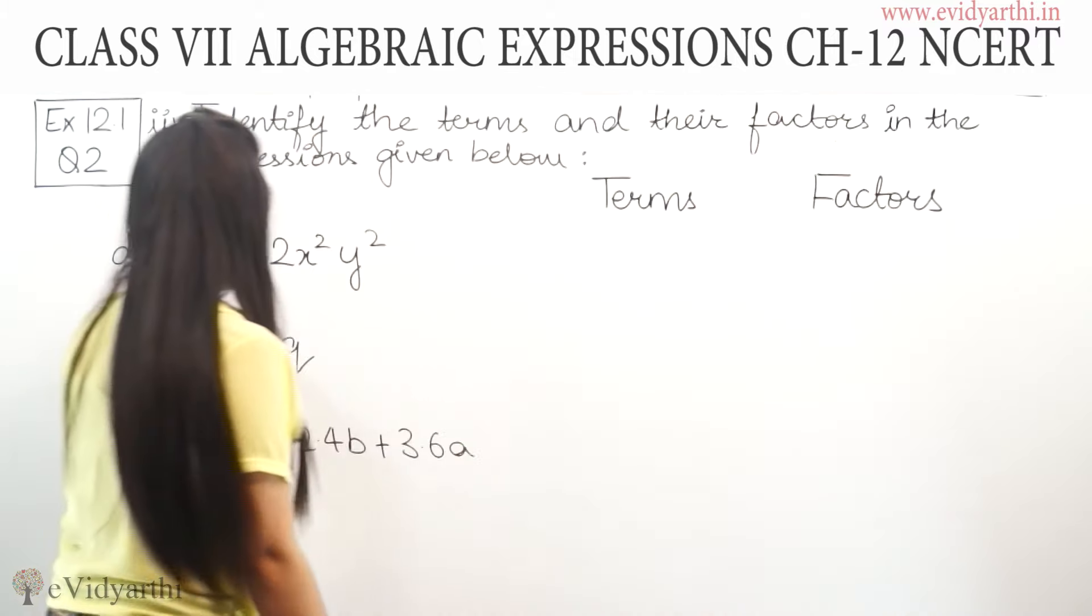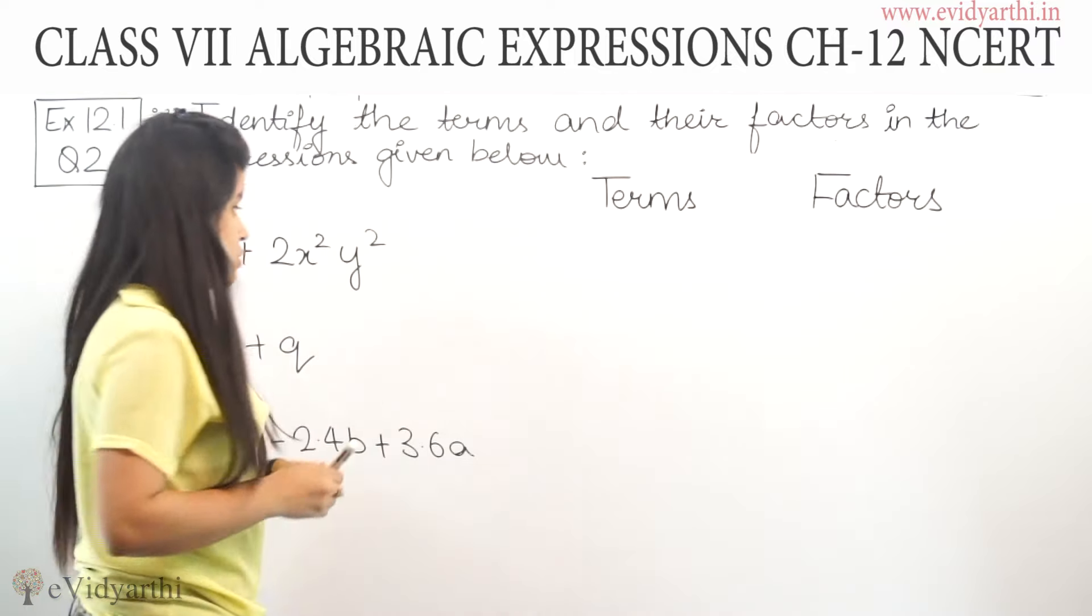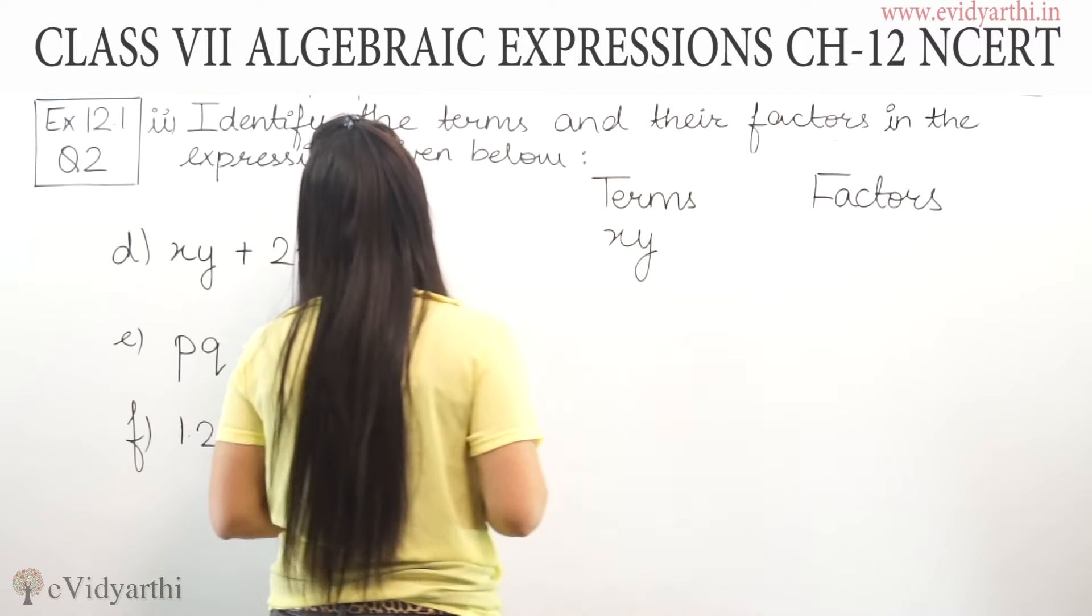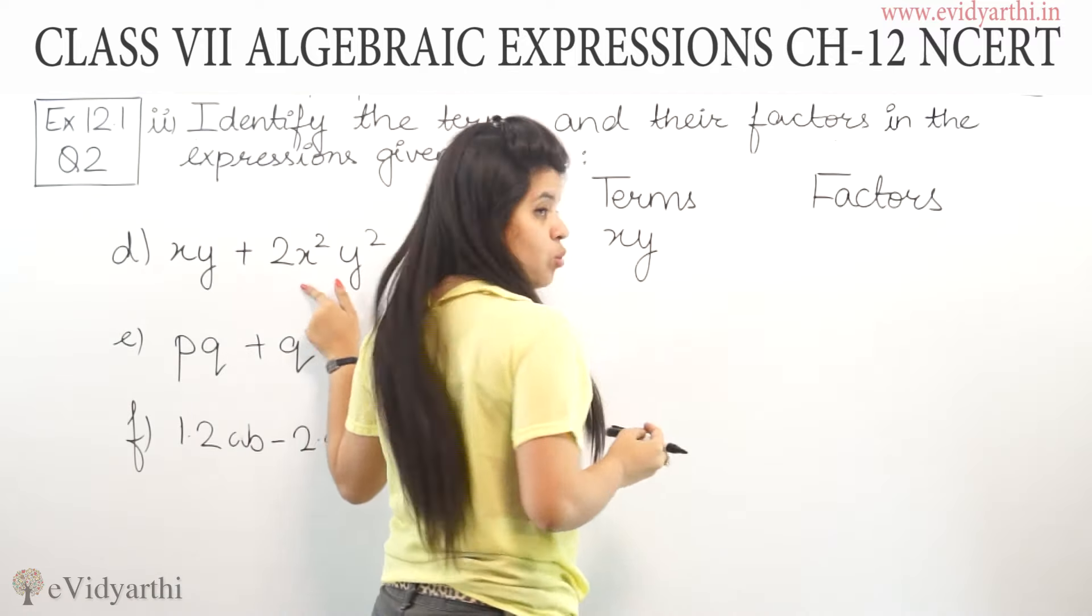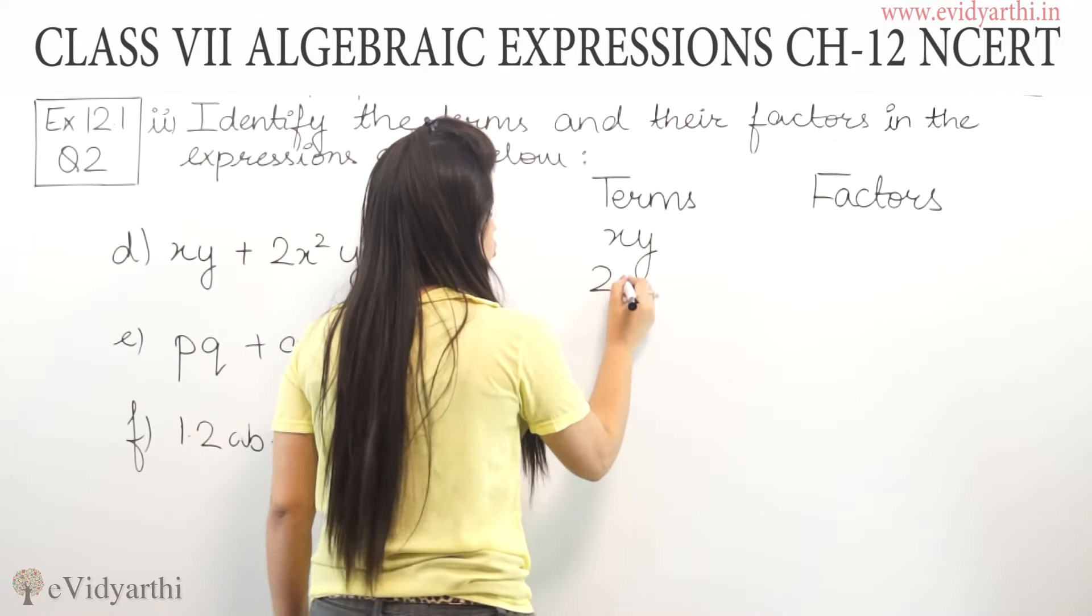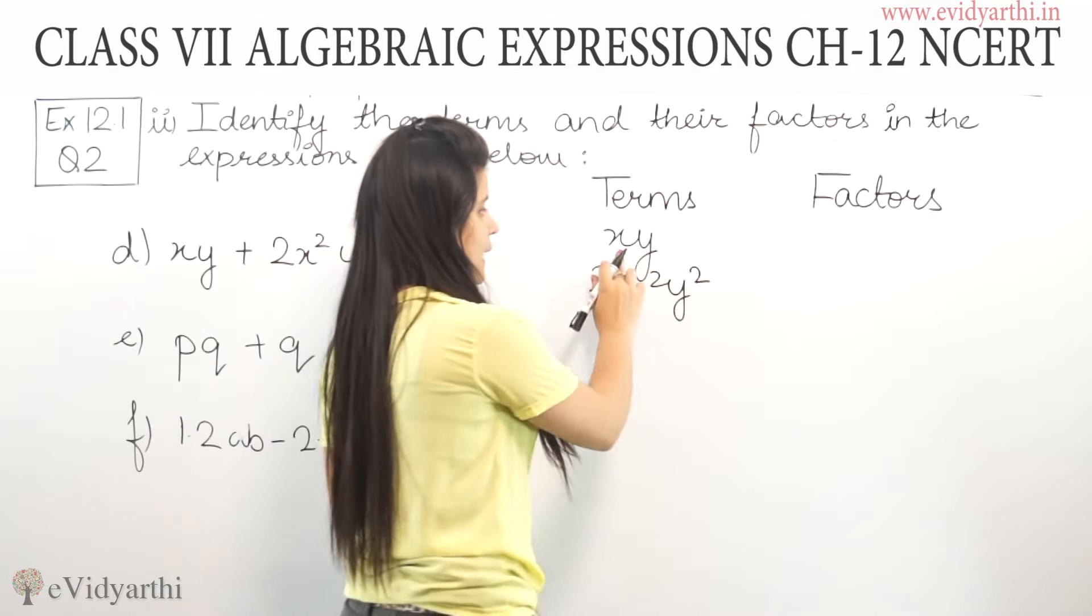Coming to part d, we have xy + 2x²y². Let's separate the terms first. One term is xy, and the other term is 2x²y². So, there are two terms.